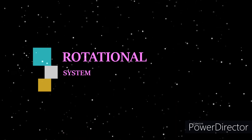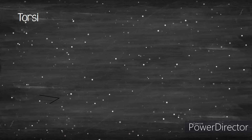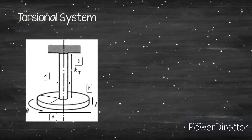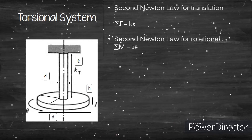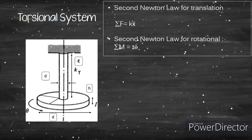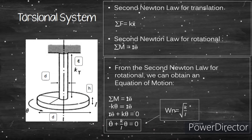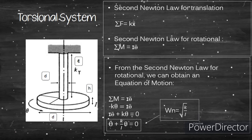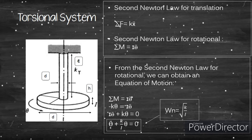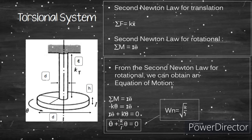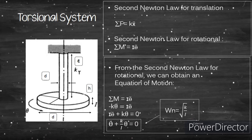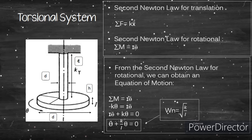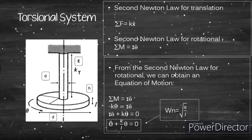Now I will explain the rotational system with circular motion. For translational motion, Newton's Second Law is F = mẍ, but for rotational motion it becomes M = Iθ̈, where M stands for moment. Writing Newton's Second Law for rotation to obtain the equation of motion: −kθ = Iθ̈, rearranged to θ̈ + (k/I)θ = 0.